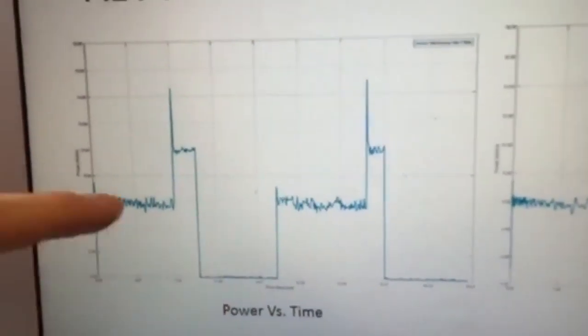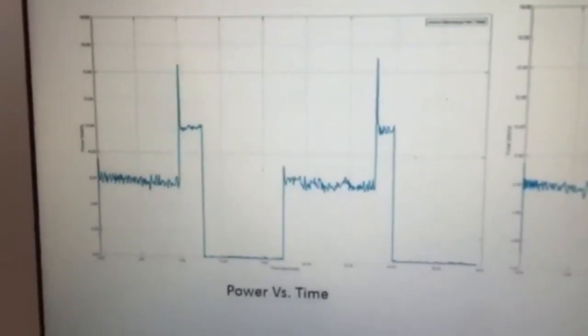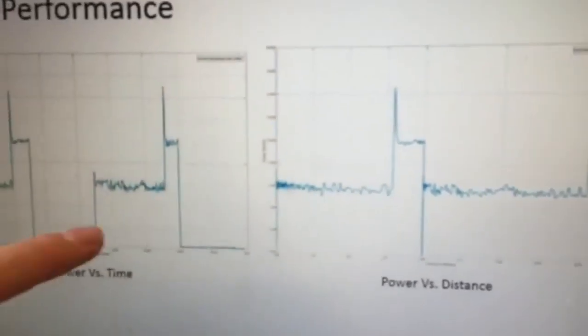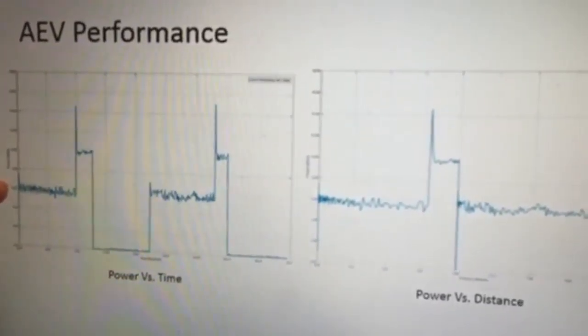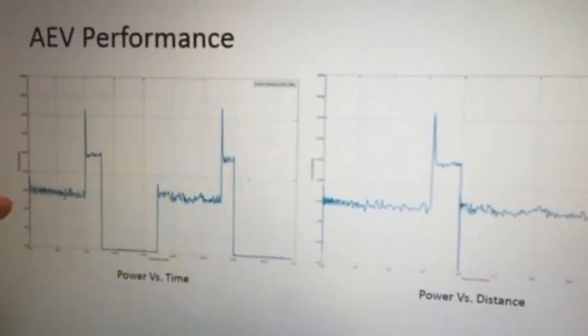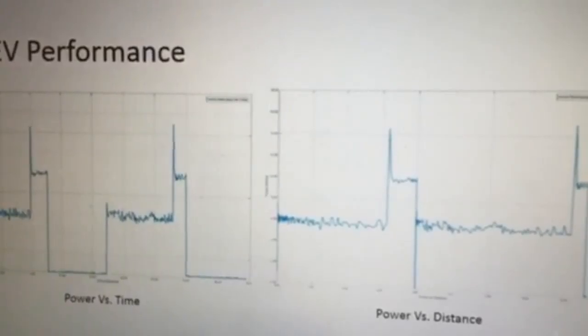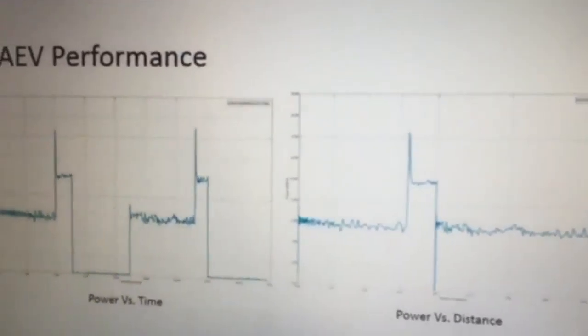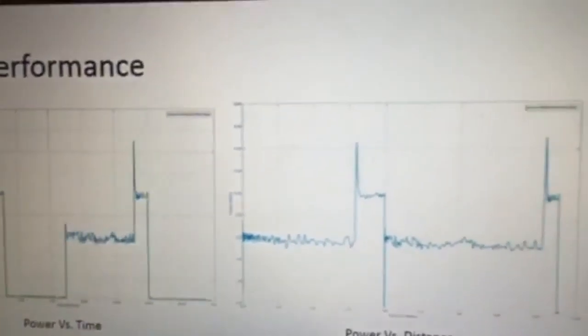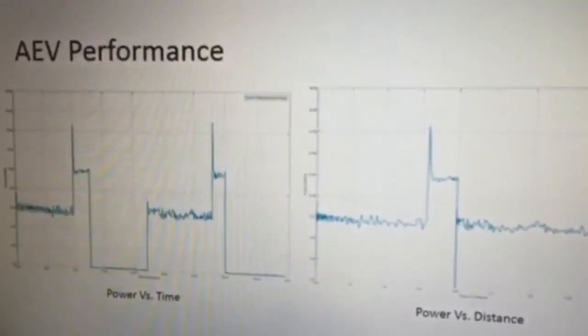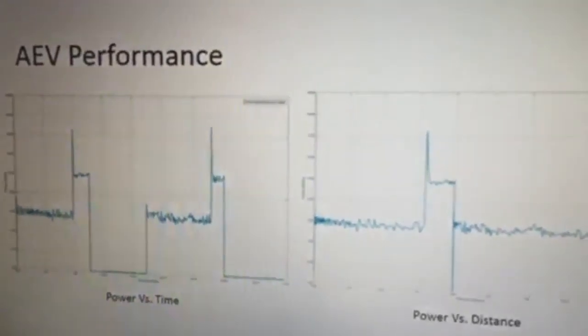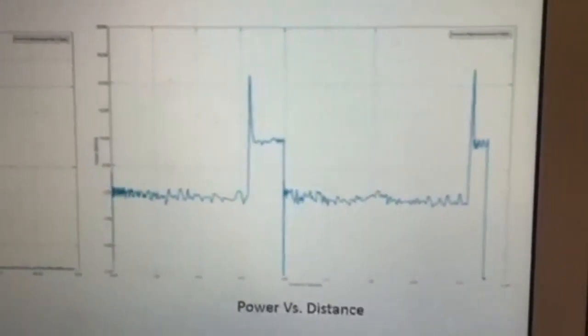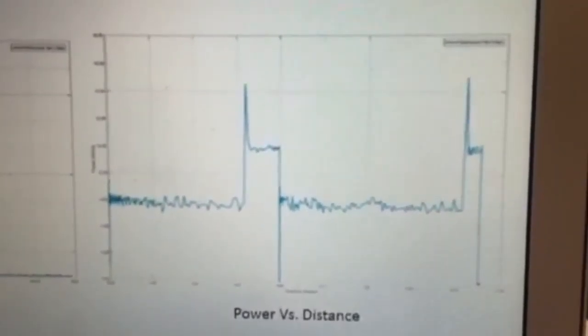The power peaks when the propellers are reversed in order to slow down the AEV at the gate. When there is no power being consumed, the AEV has completely stopped at the gate and is waiting for it to be opened. Once the gate is opened, the AEV resumes the same amount of power as it had when it began, and goes under the same process when attaching to the R2D2 unit. This graph is then repeated in the reverse direction as the AEV returns with the R2D2 unit. The power versus distance graph displays the same readings, but instead of respect to time, it is respect to distance.